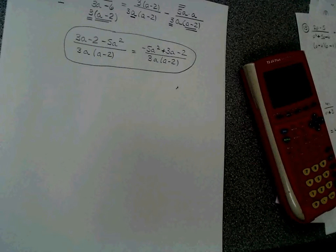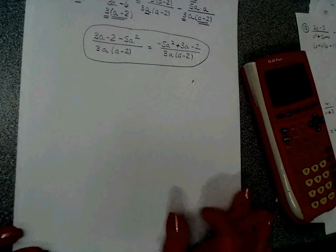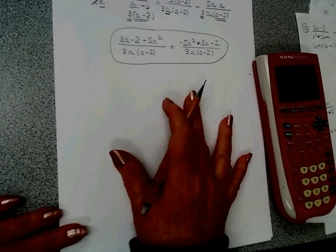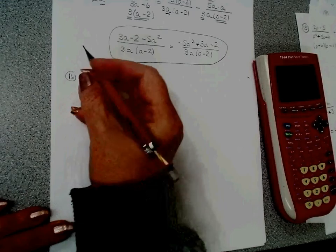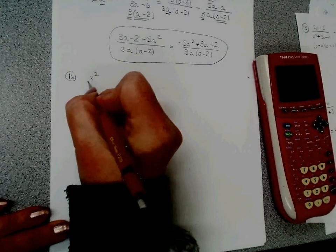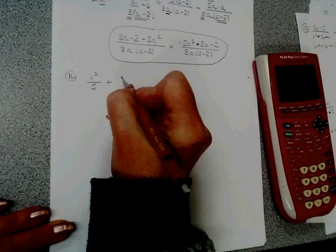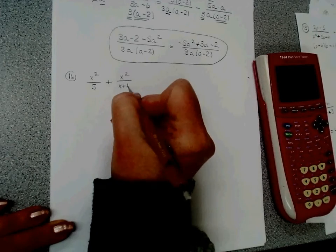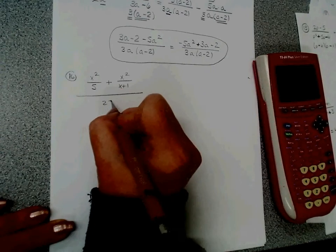All right, 16, 17, and 18. Starting with problem 16, this one is a complex fraction: x squared over 5 plus x squared over x plus 1, divided by 25 over x plus 1.